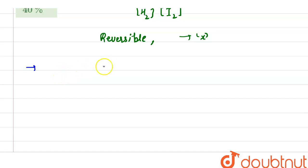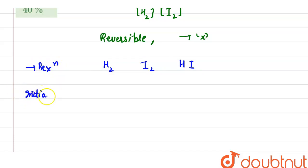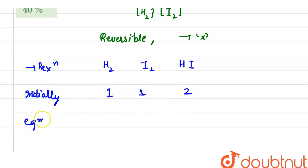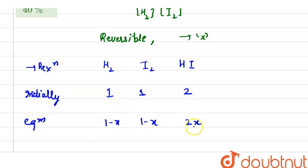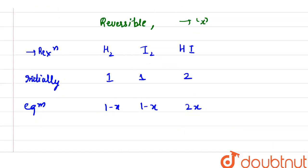We represent this data in tabular form. For H₂, I₂, and HI: initially the values are 1, 1, and 0 (we can treat initial HI as 0). At equilibrium, H₂ = 1 − x, I₂ = 1 − x, and HI = 2x, since the reactant concentrations decrease and the product concentration increases.